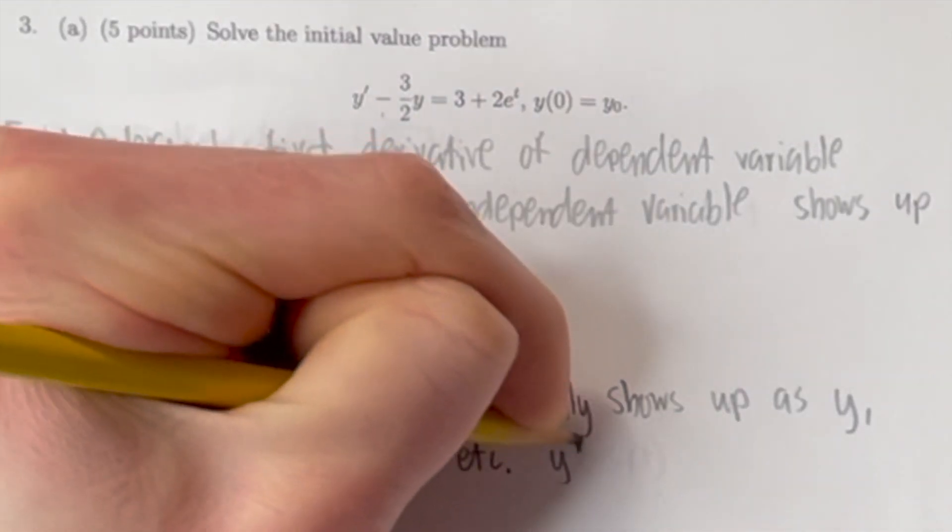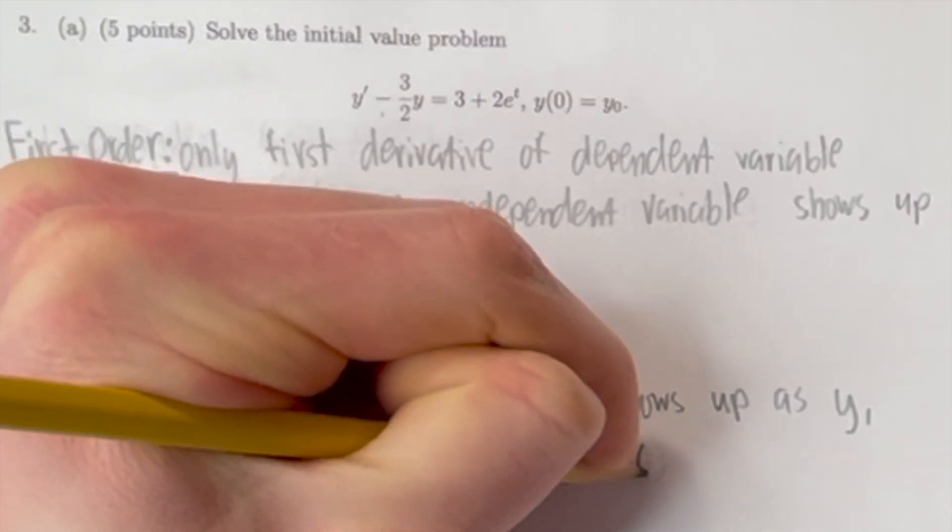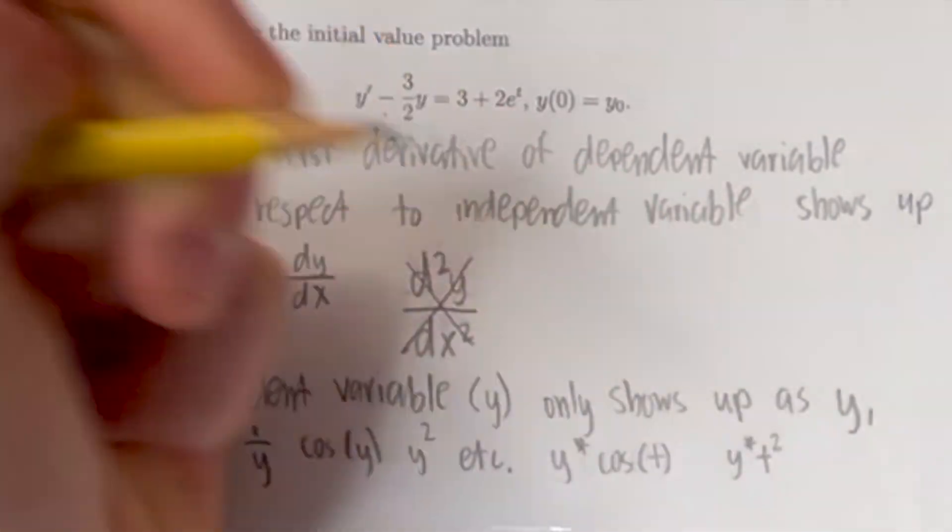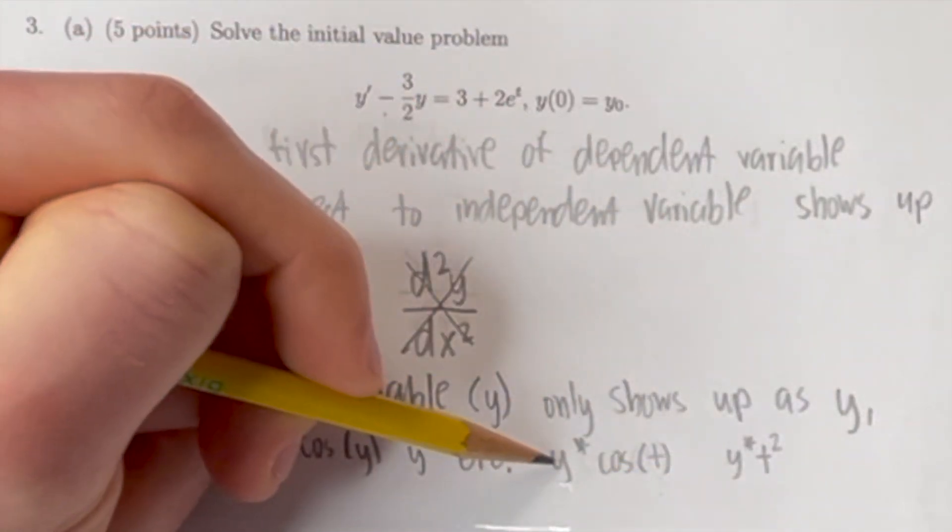y can be multiplied by a nonlinear function of the independent variable, such as cos(t) or t². However, y has to remain linear, just as y.